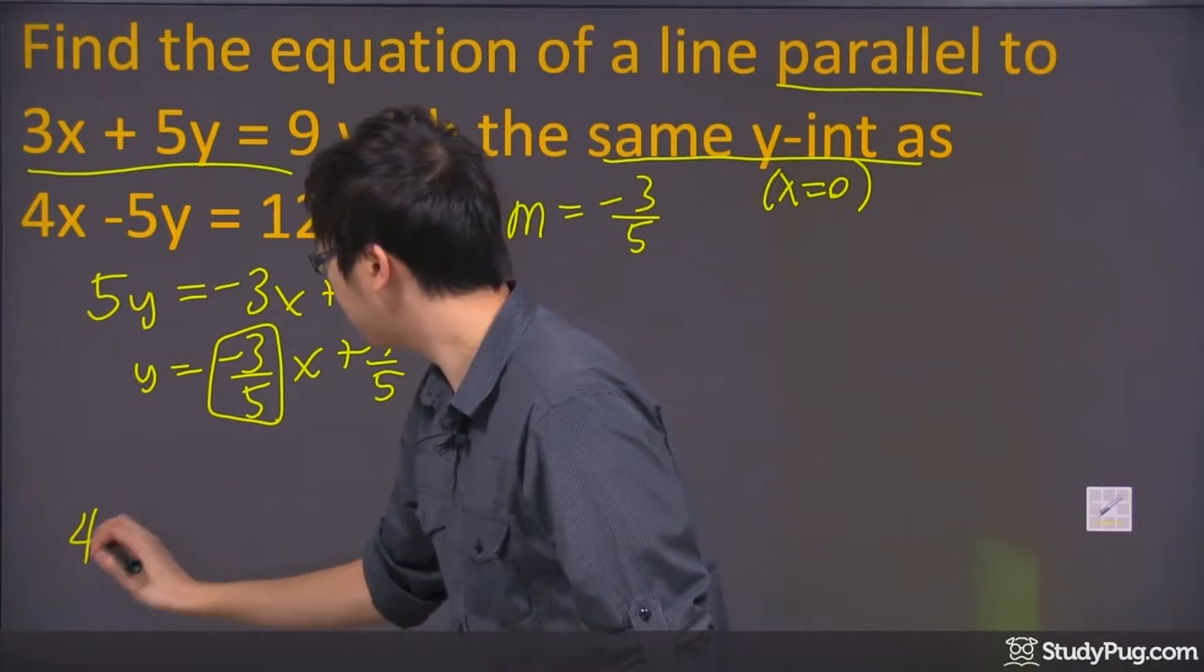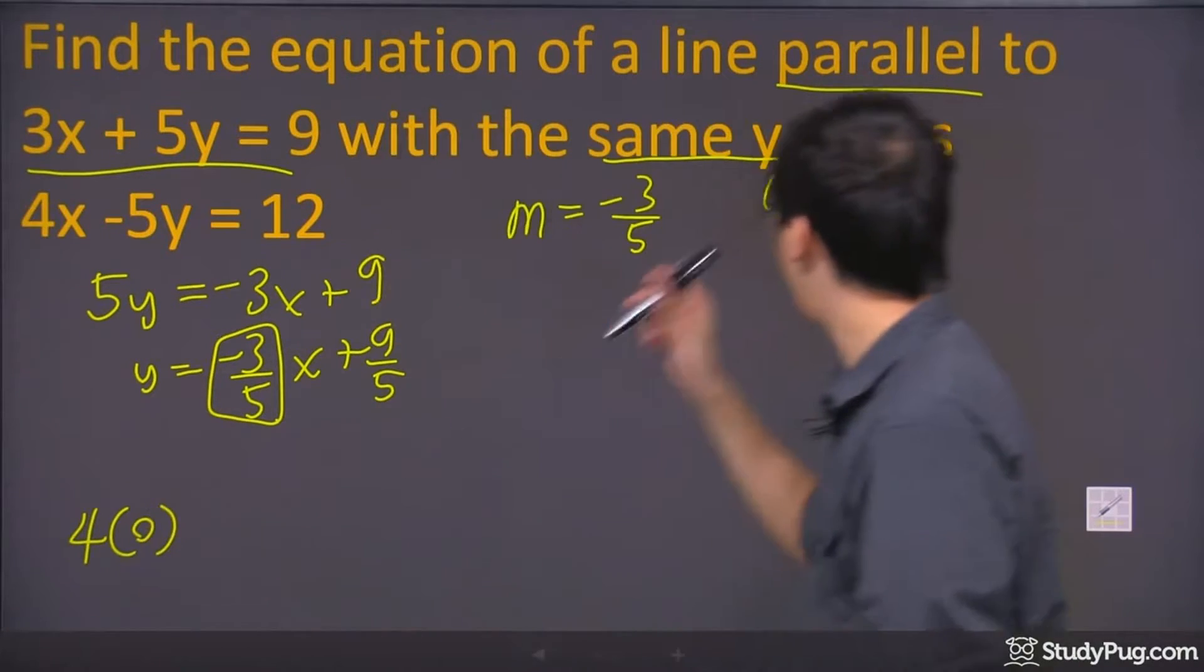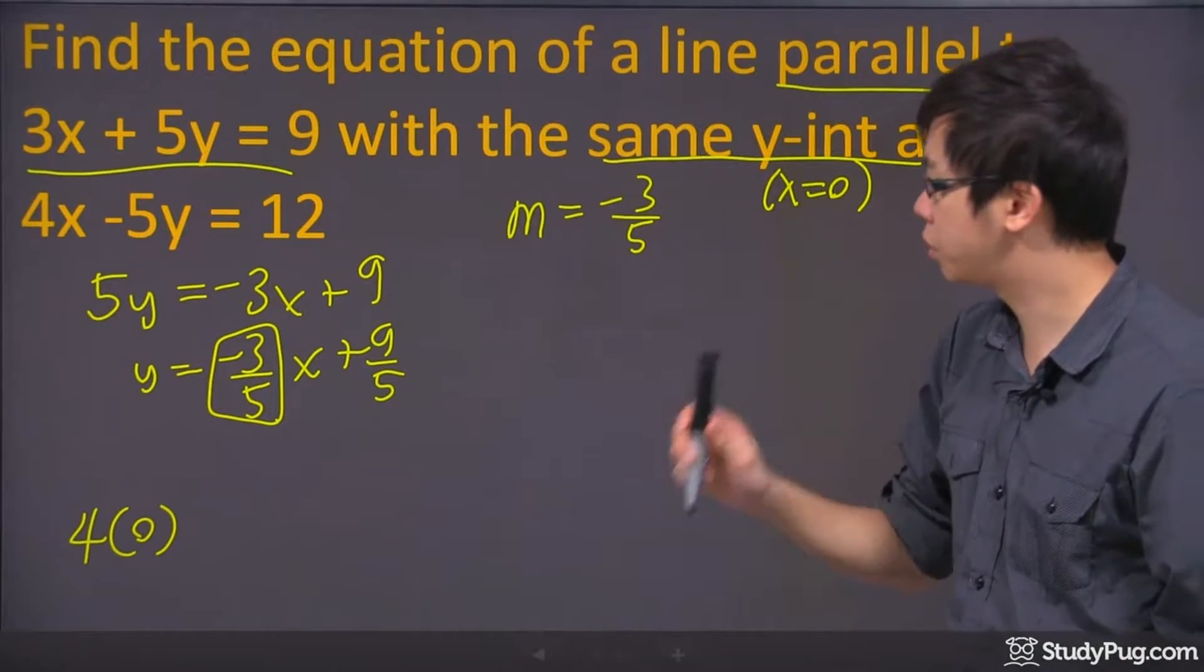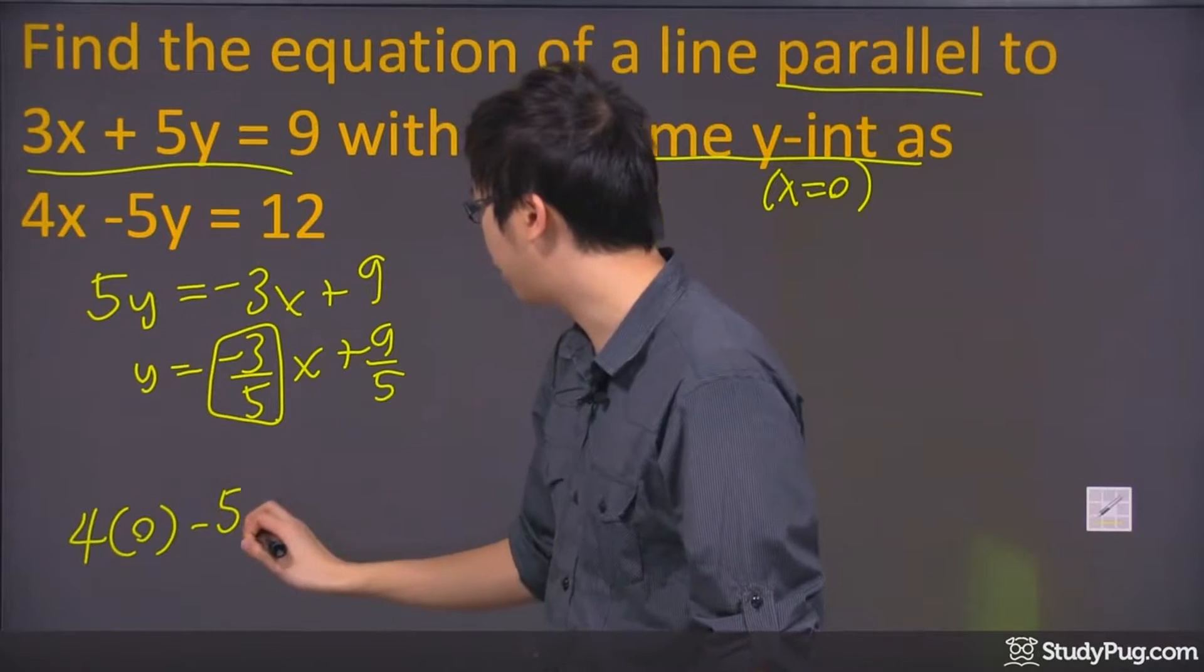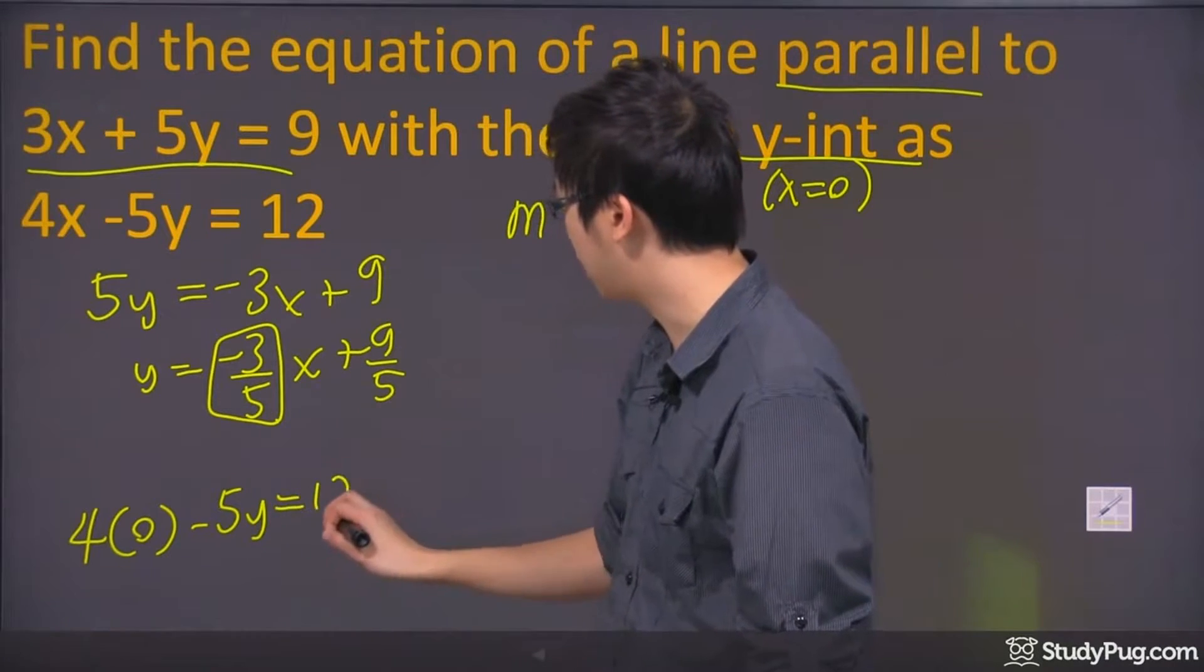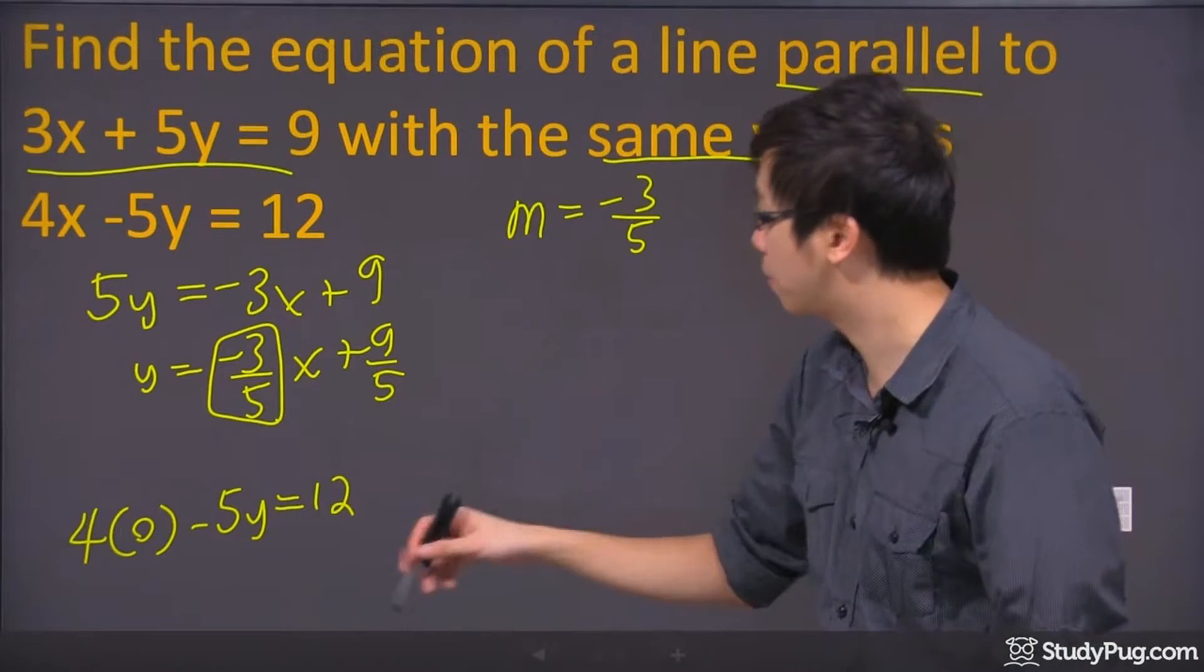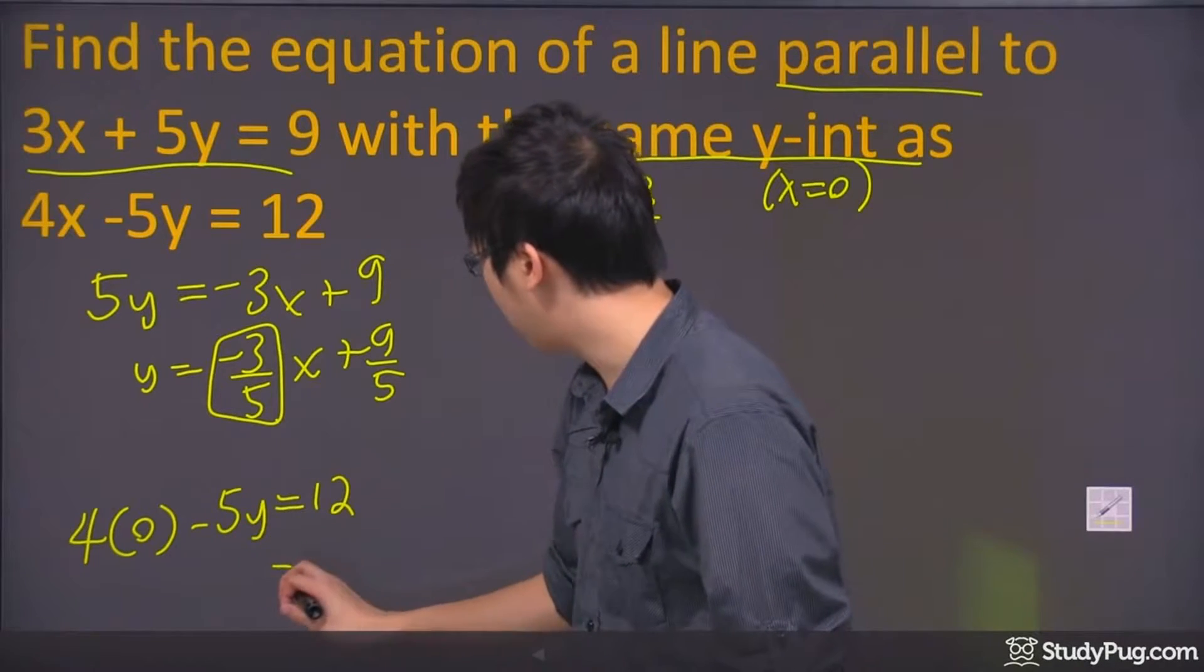So we just said that the y-intercept happens when x equals 0. So I'm going to plug the 0 in right away for the x. And I'm going to find out where that y-intercept is because they both share the same y-intercept. So I'm going to solve for y.